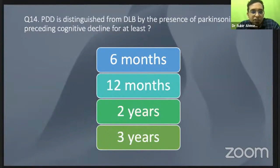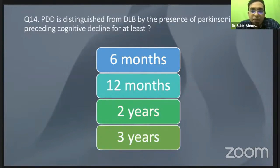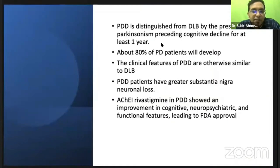How will you differentiate between Parkinson's disease dementia and dementia with Lewy body? There is a time criteria. PDD — Parkinson's disease dementia — is distinguished from dementia with Lewy body by the presence of Parkinsonism preceding cognitive decline by at least one year. So there should be more than one year of Parkinson's disease before dementia to be called Parkinson's disease dementia.